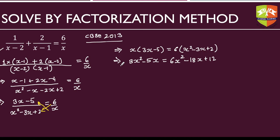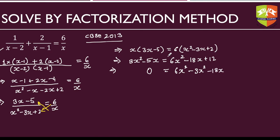Now take everything to one side and equate to zero. Since 6x squared is greater than 3x squared, move terms to the right: 0 equals 6x squared minus 3x squared minus 18x plus 5x plus 12, which simplifies to 3x squared minus 13x plus 12 equals 0.